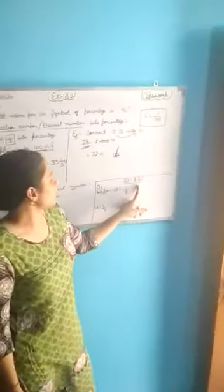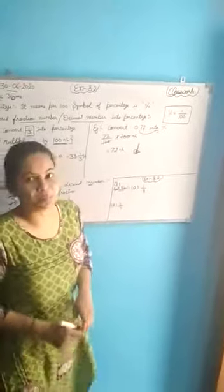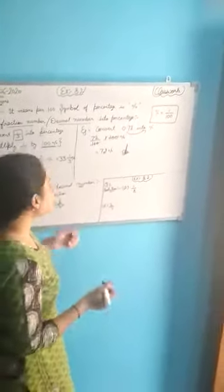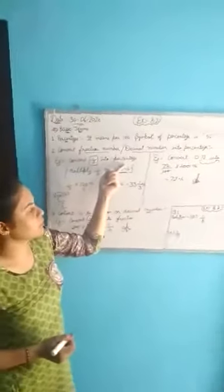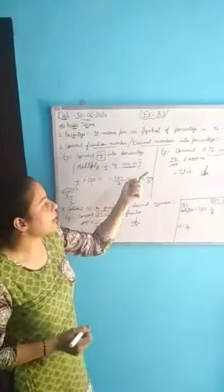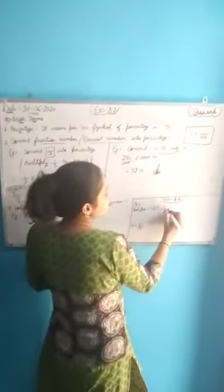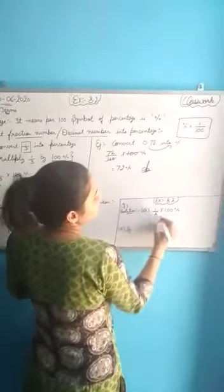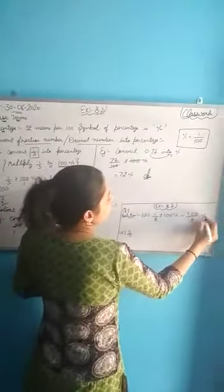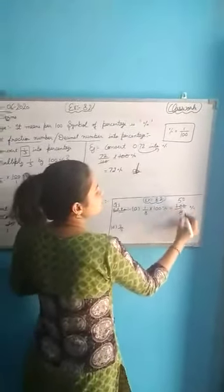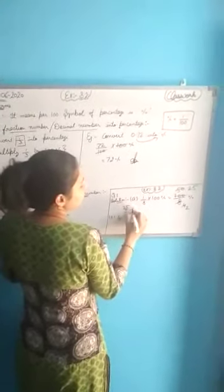Now exercise 1.2, question number 1: convert the given fraction number into percentage. As we know, multiply the fraction by 100 percent. For 1 by 8, multiply by 100 percent, giving 100 divided by 8 percent. Simplifying: divide both — 2 fours are 8, 2 fives are 10 — giving 25 by 2 percent.